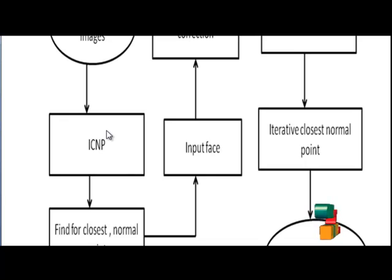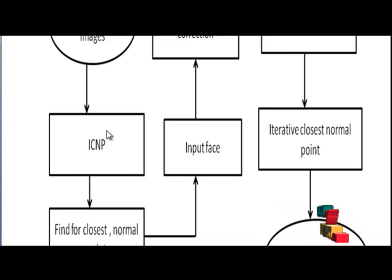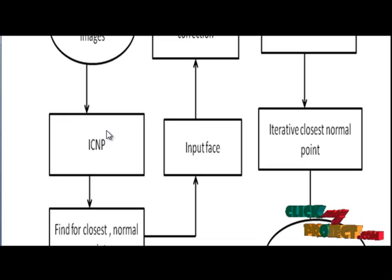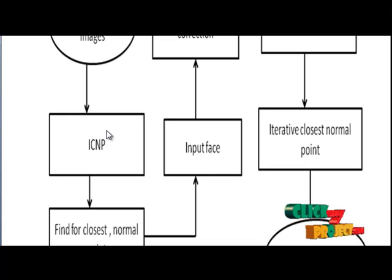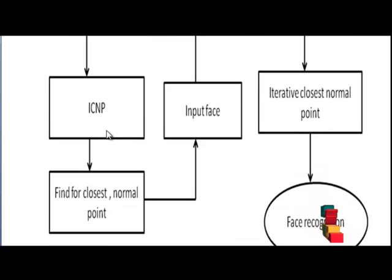After the last iteration of the ICNP algorithm, the final CNPs are obtained. The same rigid transformation is also applied to the corresponding color image of the input face to maintain pixel-to-pixel correspondence between the 3D face and its color image. Finding the CNPs can be considered as sampling the points of a face surface with respect to the points of the reference face.